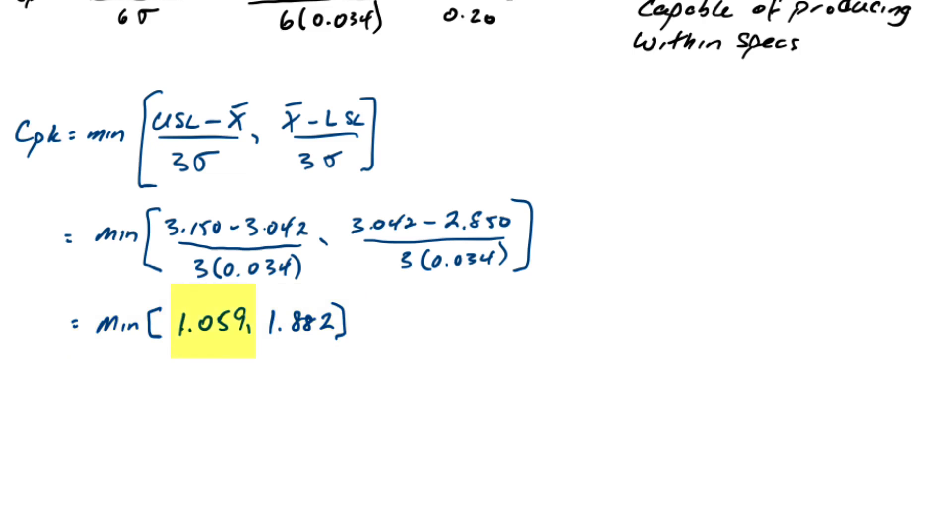We pick 1.059 because it's the lower of the two and 1.059 is still very capable but tends to favor the higher specification.